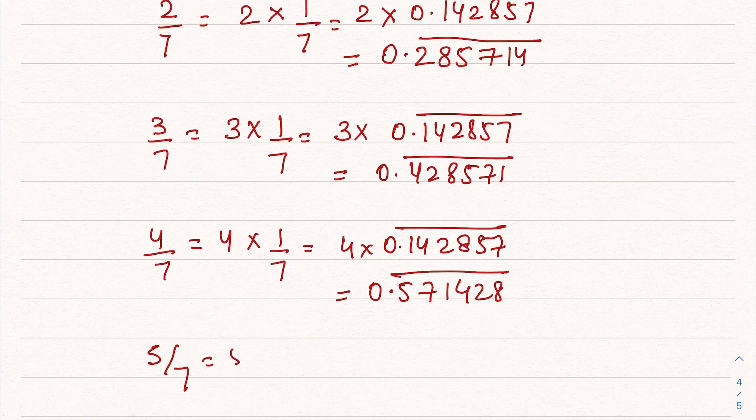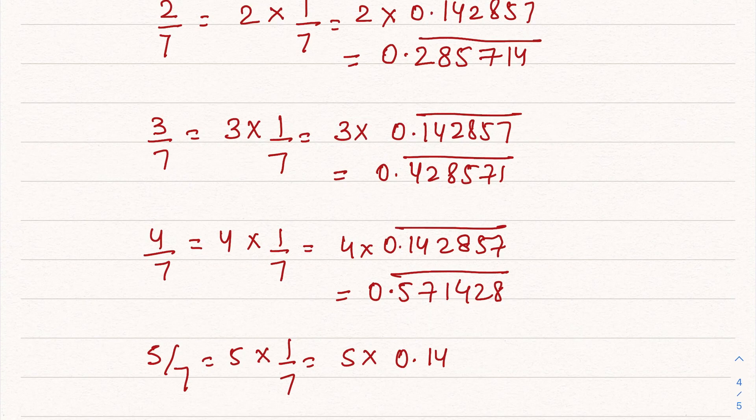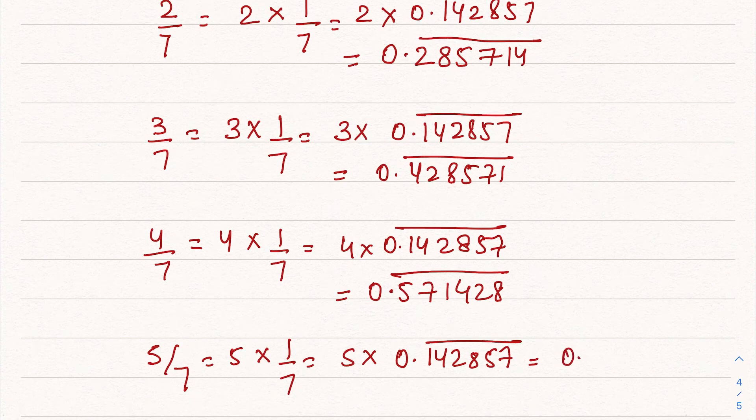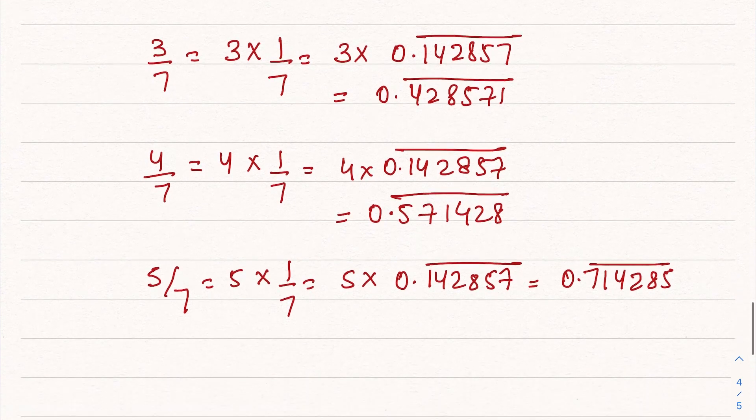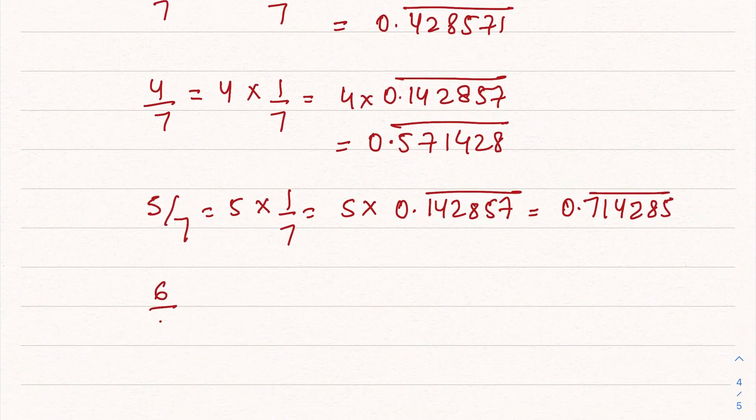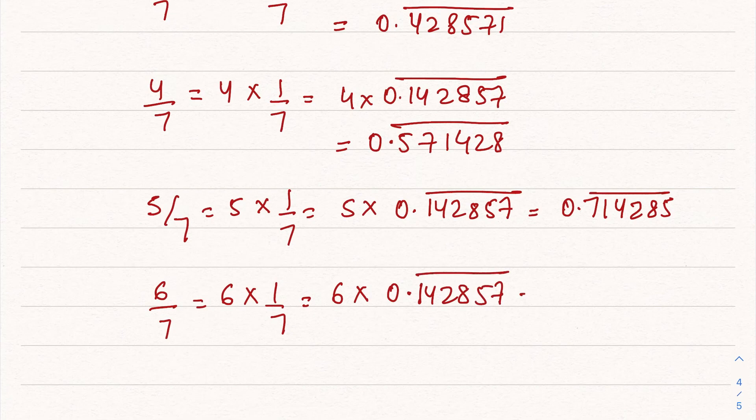5 by 7, that is 5 times 1 by 7. Here we multiply 5 by 0.142857 bar, and we get the answer 0.714285 bar. 6 by 7, that is 6 times 1 by 7. This becomes 6 multiplied by 0.142857 bar. When you multiply it, you will get 0.857142 bar.